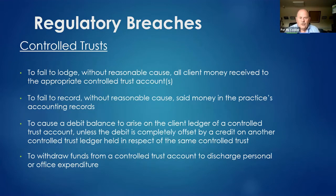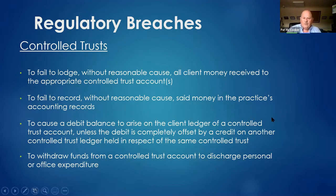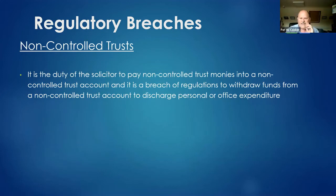Regulatory breaches also apply to controlled trust accounts, where the solicitor has sole access to the money — for example, as executor of an estate. It is a breach if money for controlled trust accounts is not lodged as soon as it is received, if you fail to record the money in the accounts, or if you cause a debit balance — just because you are the executor does not mean you are allowed to overdraw the client account. Controlled and non-controlled trust accounts have exactly the same regulations.